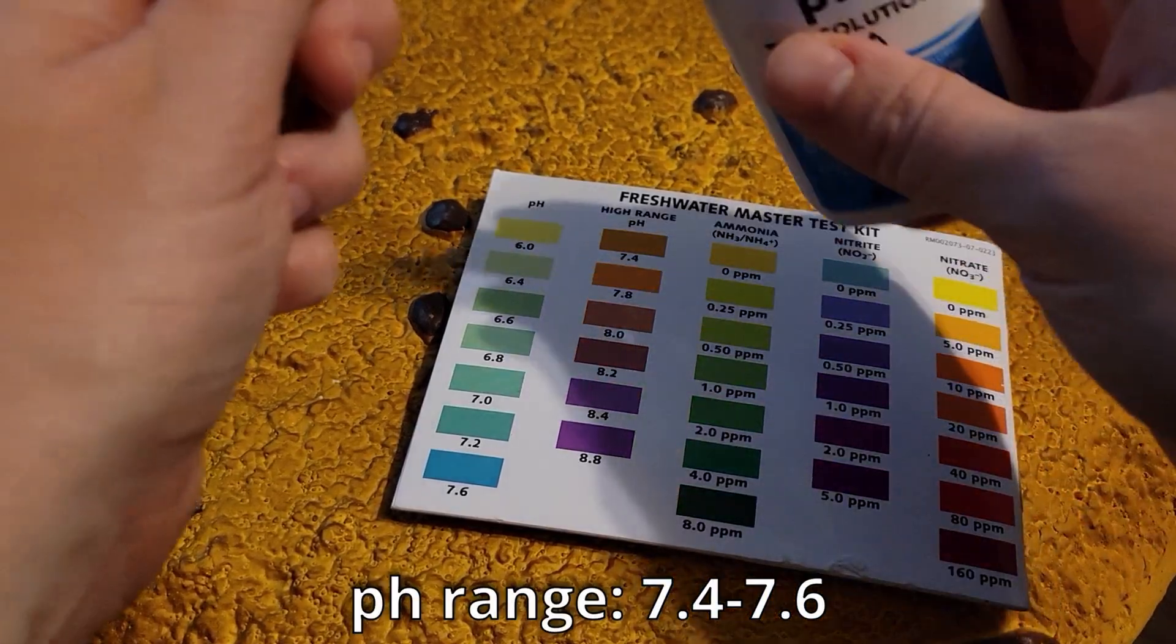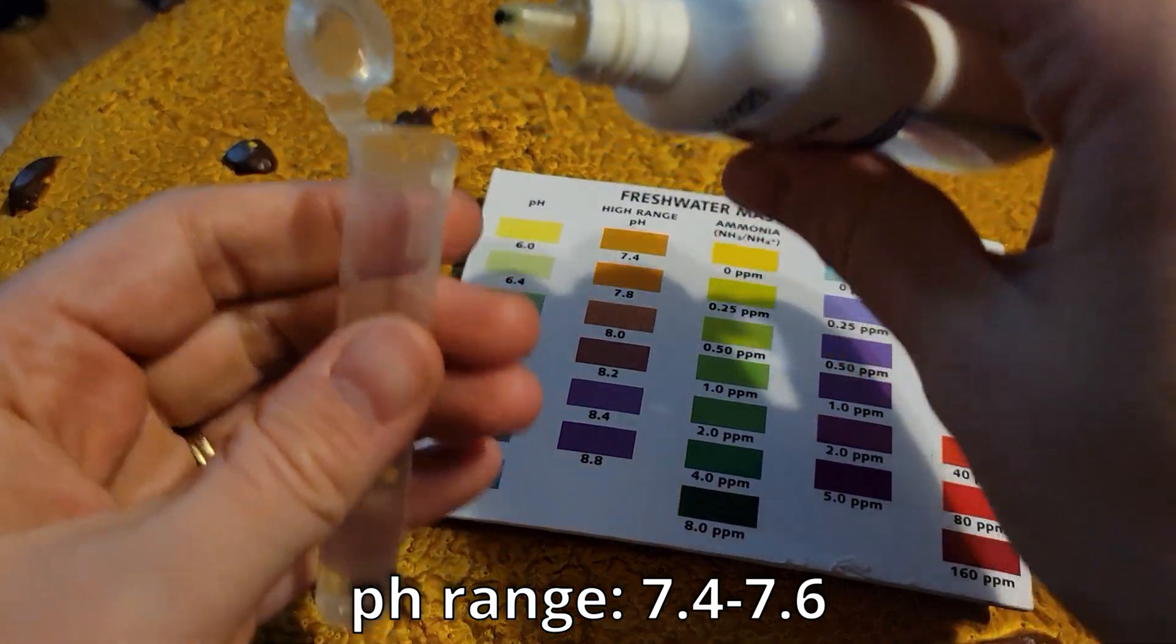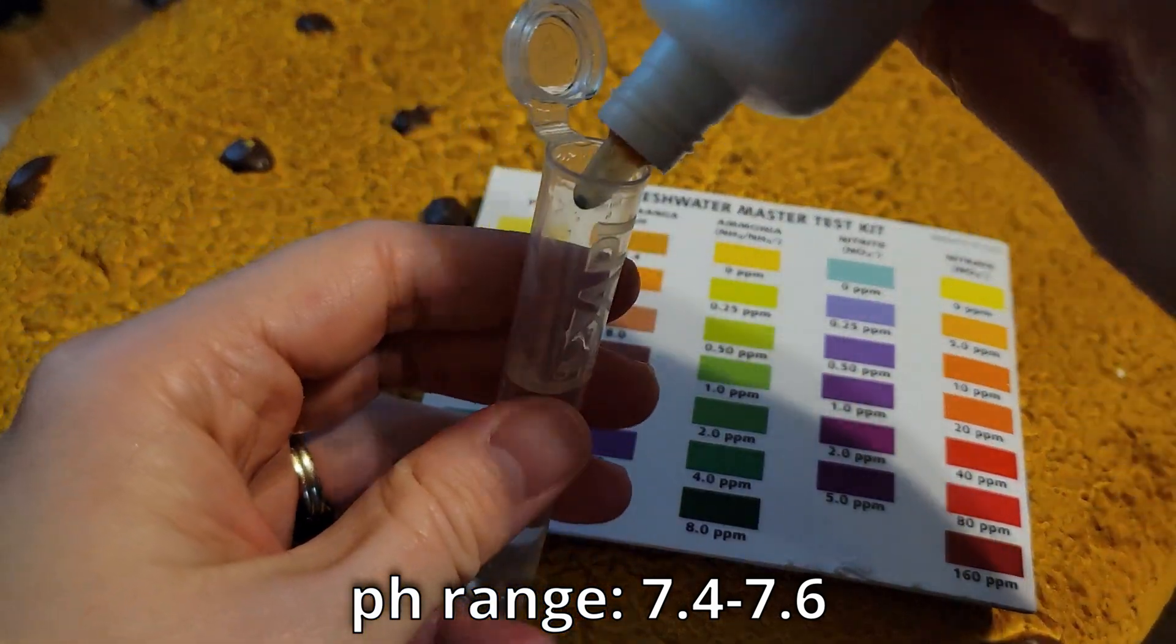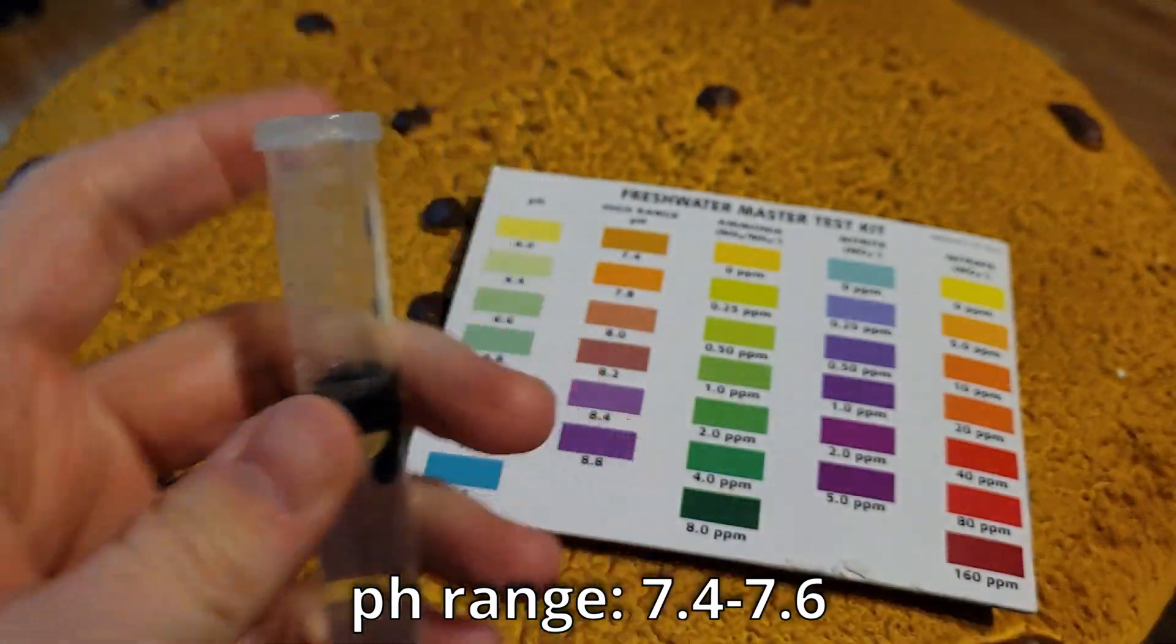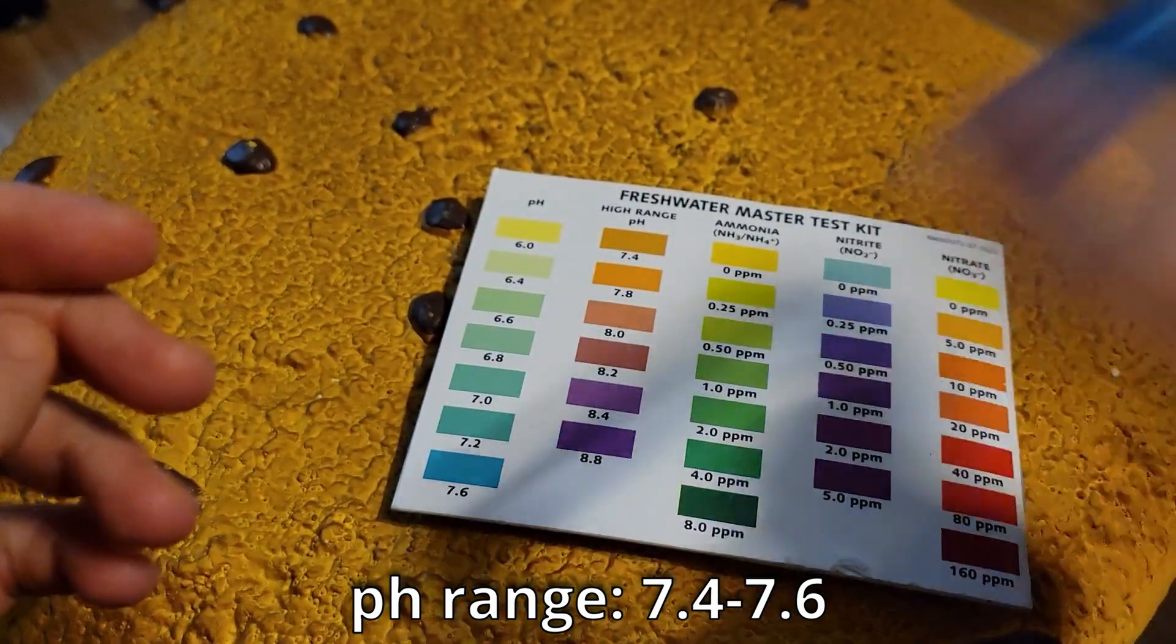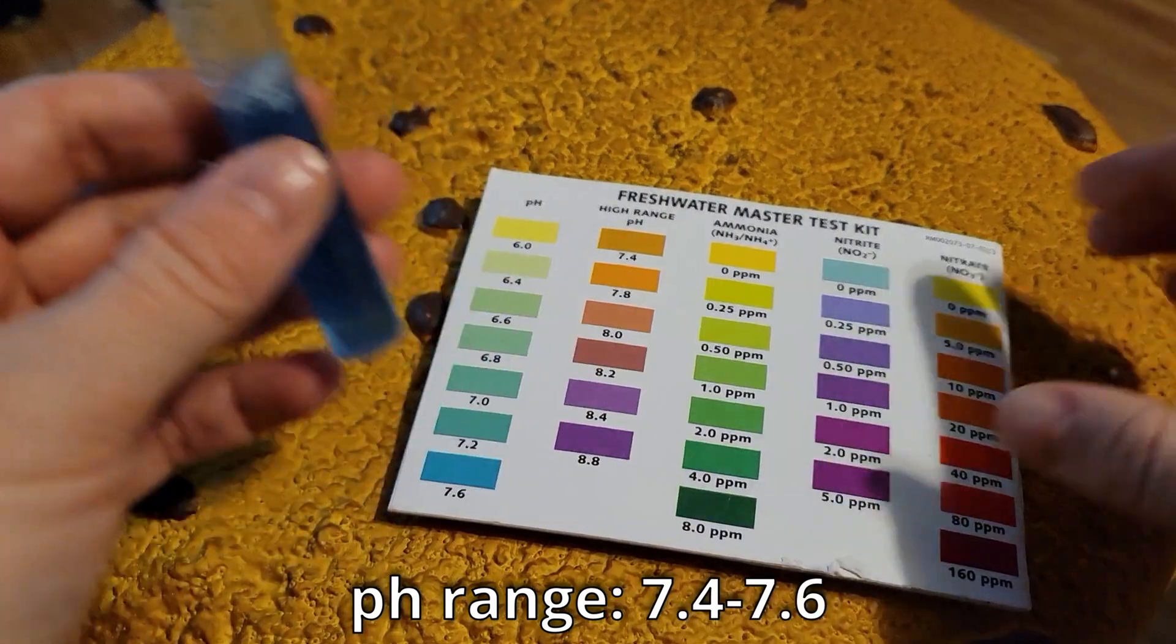So we are going to start with the pH. For this, you are going to add three drops into the test tube and then you shake the test tube up. After it is shaken up, you wait five minutes for the test to develop and that is when you compare it to your chart.